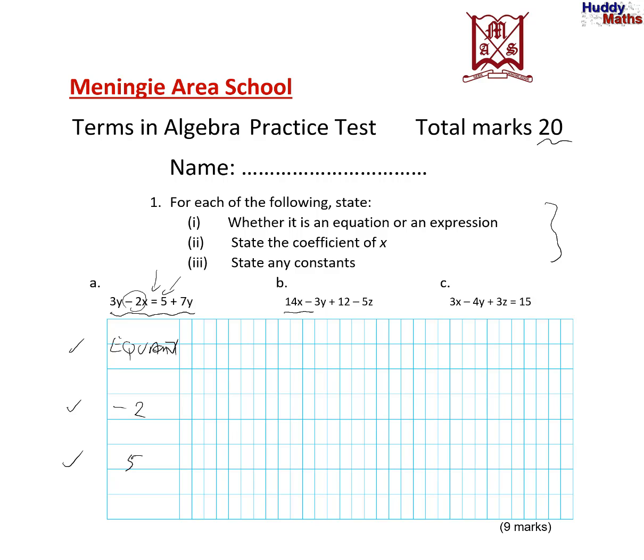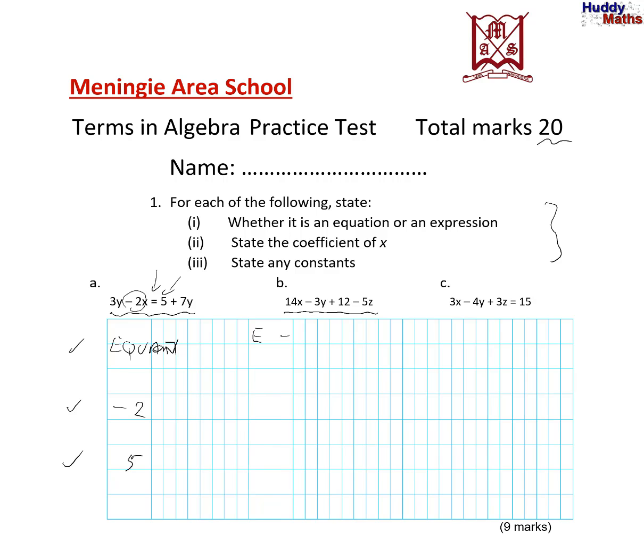What about part b now? Is it an equation or an expression? There's no equal sign there. So it is an expression. State the coefficient of x. Where is x? Here it is here. And the number in front of it is 14. So we'd say the coefficient of x is 14. State any constants. There it is. No x, y or z in there. So it is answer 12 for that one.